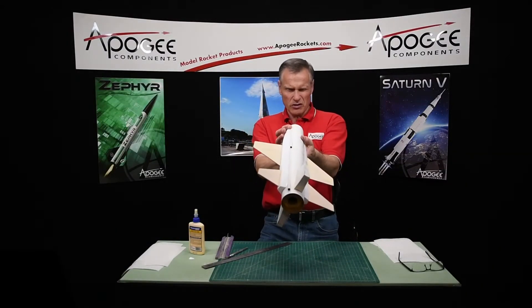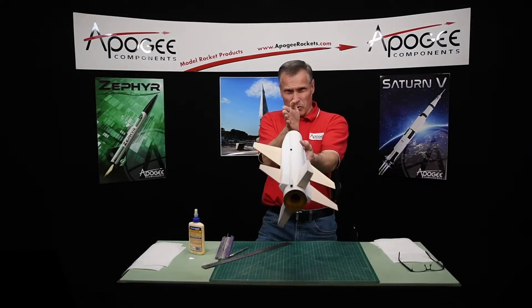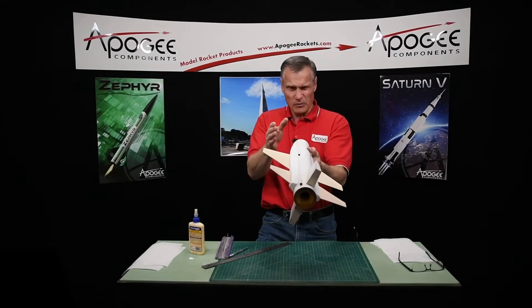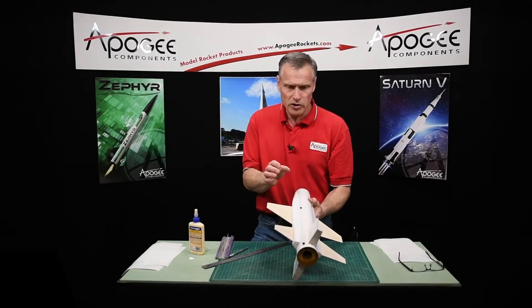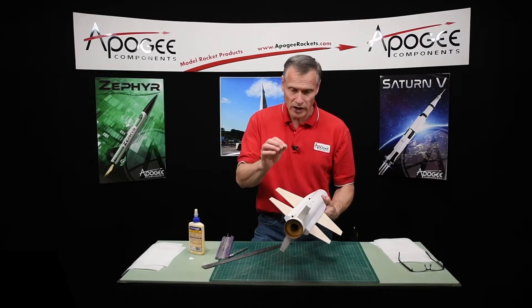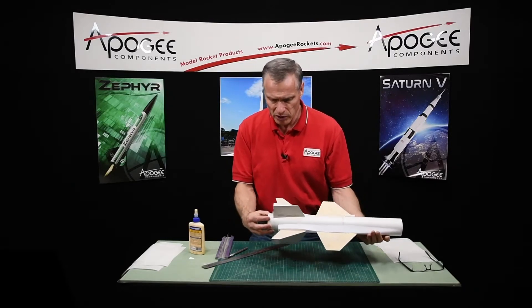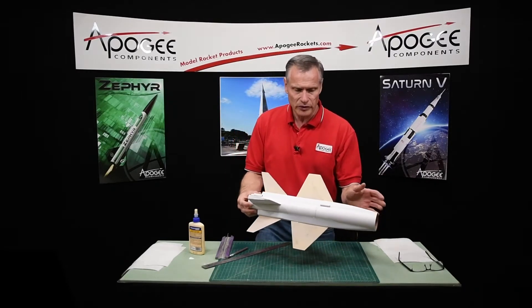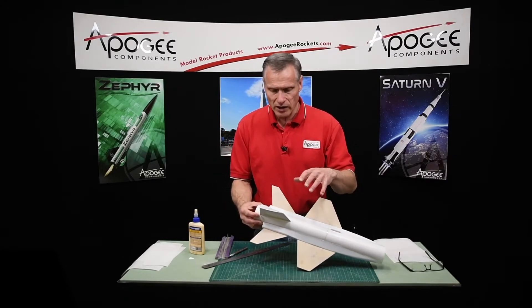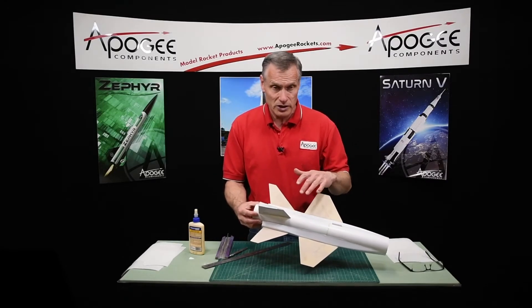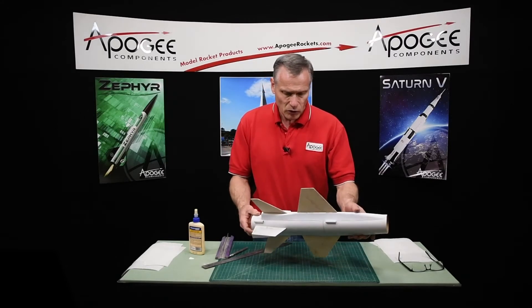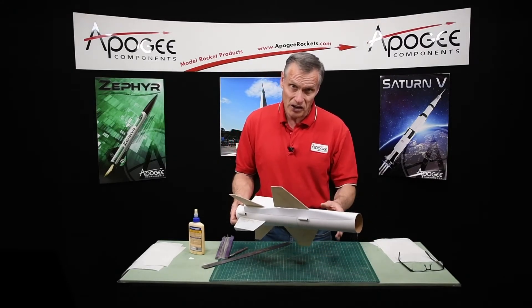Just sight down them to make sure that they're both aligned and none of them are twisted. If you really want to double check them, run a launch rod through there. Mine look pretty good, so I'm happy with them. Now I'm going to let this dry completely before I put my fillets on. Okay, so I'll be back for that next step.